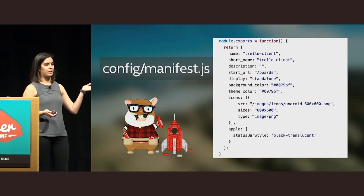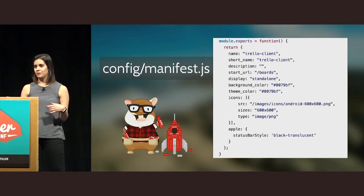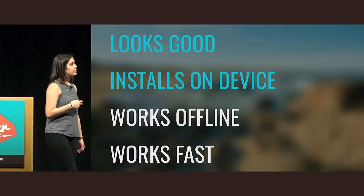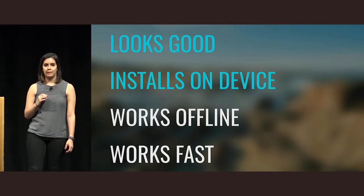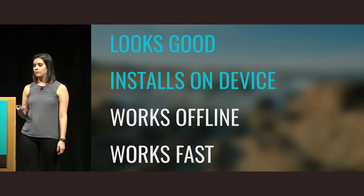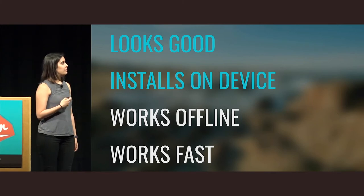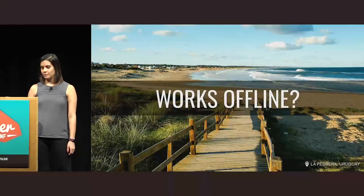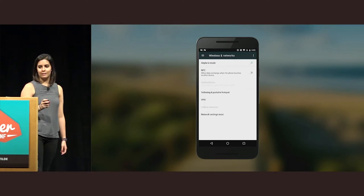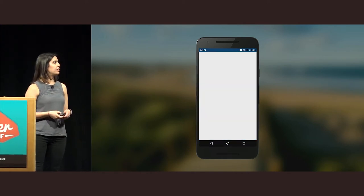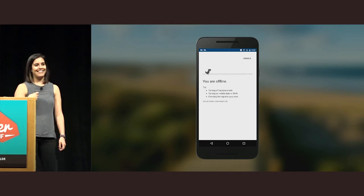Up to here, we've seen small changes that make our apps look more native and improve the install experience. But we need to see how to make our app work offline or behave better. Here I'm enabling airplane mode — I have my app saved on the screen. I see the splash screen, and then I see the dinosaur. So yeah, we know this is Chrome.